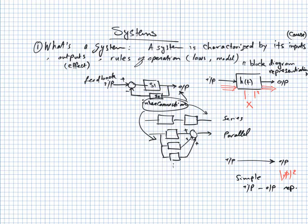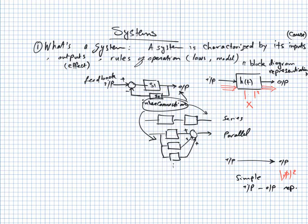A circle in a block diagram represents an additive system — a system that adds inputs together. Some inputs may be positive and some negative, giving addition and subtraction. A circle with an X inside represents a multiplier — whatever inputs go in are multiplied together. Both inputs and outputs of a system are signals.